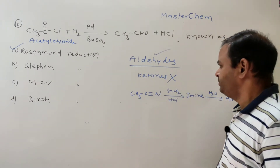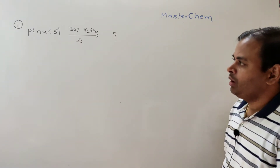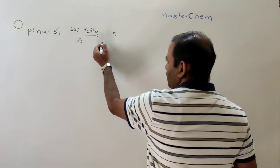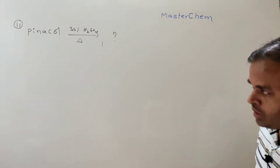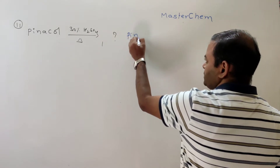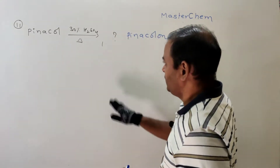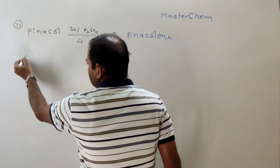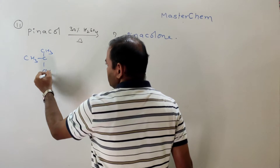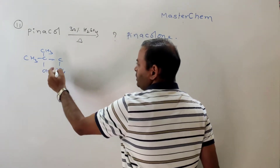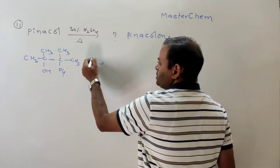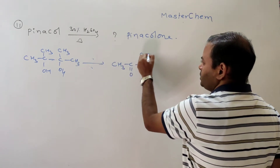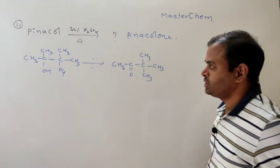Question 11: Pinacol in the presence of 30% H₂SO₄ by heating gives pinacolone — this is the pinacol-pinacolone rearrangement. Pinacol is a diol: CH₃C(OH)(CH₃)–C(OH)(CH₃)CH₃, which is 2,3-dimethyl-2,3-butanediol. The product pinacolone is CH₃COCC(CH₃)₃ — a ketone. Rearrangement takes place in the compound, which is why this is called the pinacol-pinacolone rearrangement.